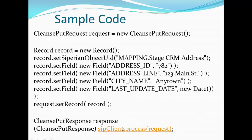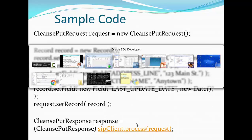Sample code for the CleanSpot request looks like this. Create an object of CleanSpot Request, then create a record object passing the mapping name — for example, mpCust. On the record object, set the fields you want to update or insert: address ID, address line, city name, last updated, etc. Pass that record object into the request, then process it using the SiperianClient and its process method. The response will indicate how many records were updated or inserted.